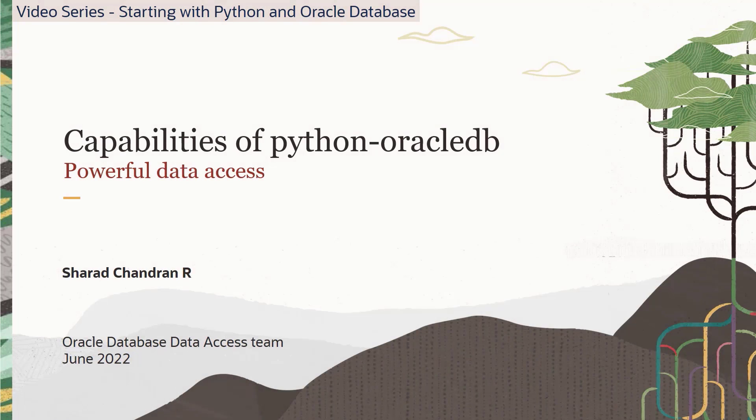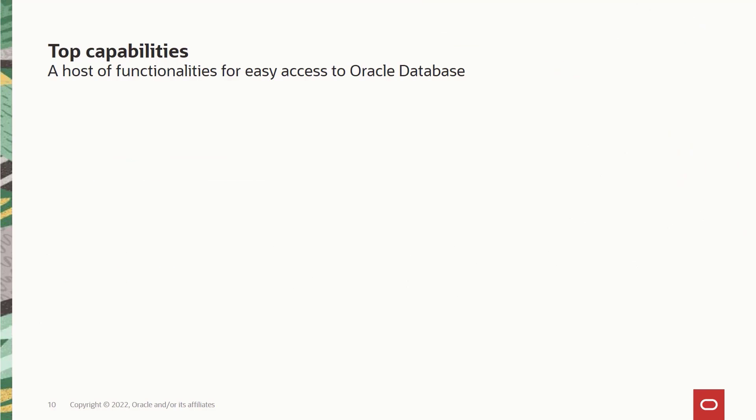Welcome back everyone. Now let's look at the top capabilities of the Python Oracle DB release, including specific attributes of the thin and thick modes. We have a whole host of functionalities in Python Oracle DB to access and work with Oracle database, starting with SQL and PLSQL execution, which provides significant optimizations including compressed fetch, prefetching, client and server result set caching, and statement caching with auto tuning.